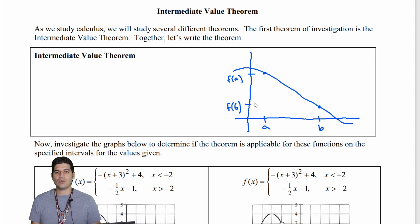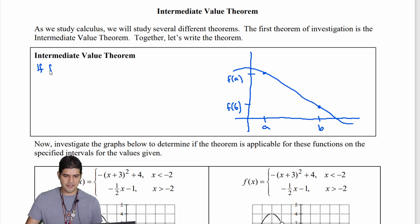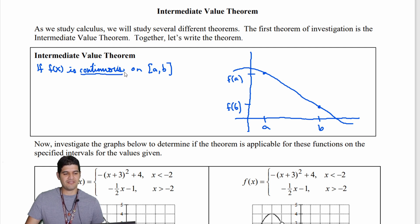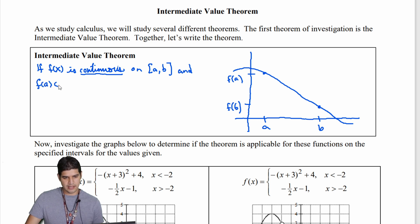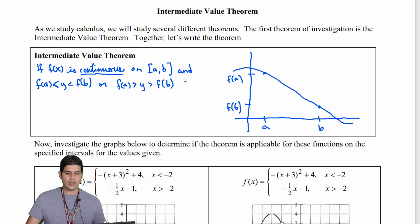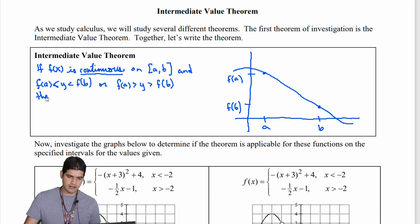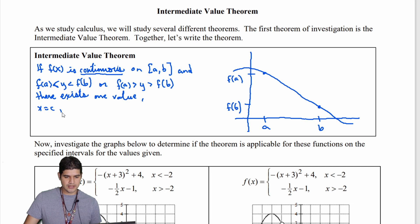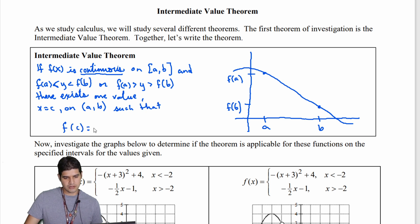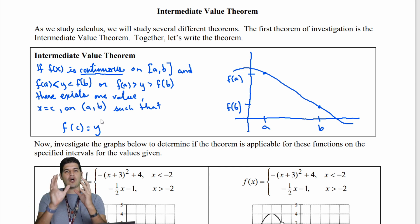Now let's write out what the intermediate value theorem says. If f of x is continuous on the interval from a to b — and continuity is a huge idea here, the function needs to be continuous first — and y is between f of a and f of b in either direction, then there exists at least one value x equals c somewhere between a and b such that f of c equals y.